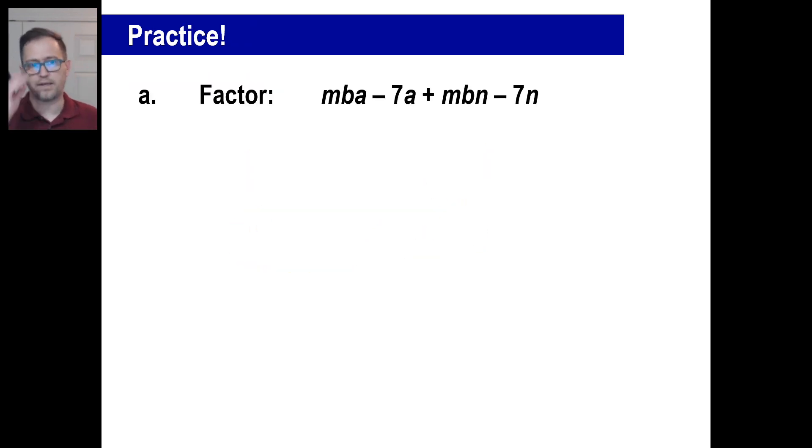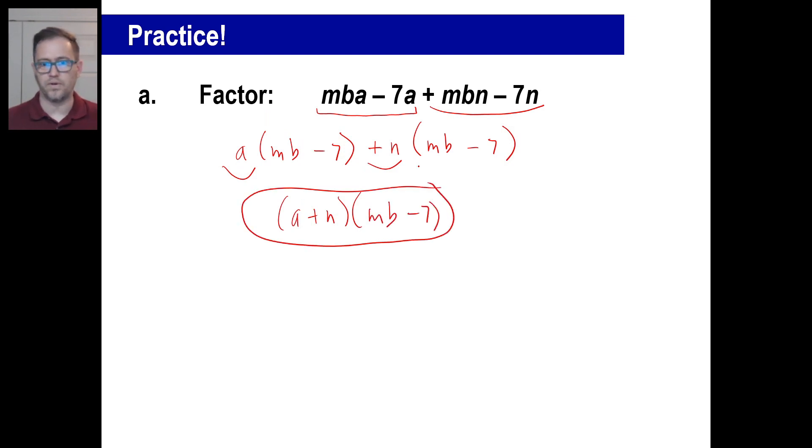So let's try the first practice problem. Go ahead and pause that, and give it a whirl. Okay, you could have done any way you wanted. We'll just go ahead and take the first two, and we can pull out an a there, and we have an mb minus a seven. So let's try this one. Try these two, and the common factor is n, and we put that in there. We have an mb minus seven. Then we have an a plus an n. That'll be one part. And then the other part is mb minus seven, and that's it. And it doesn't matter what order those two are in. You could have mb minus seven times a plus n. Totally fine.